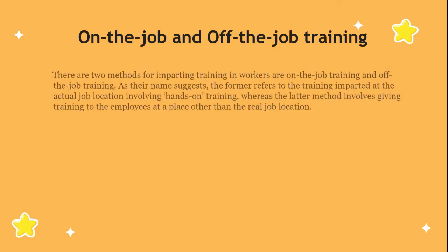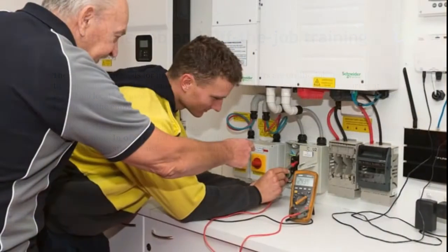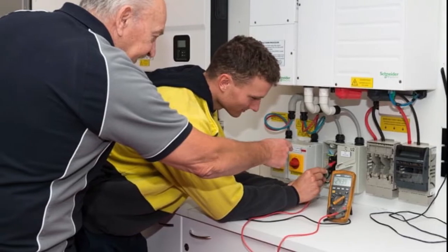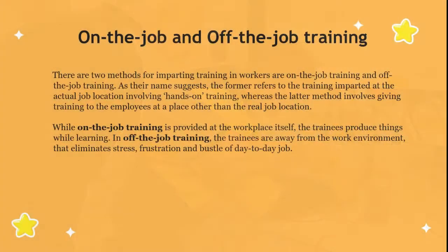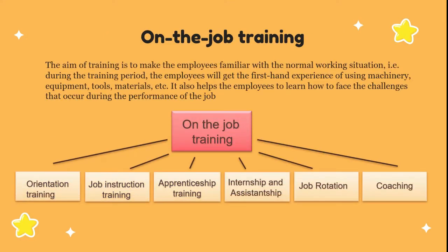Nowadays training has become the core need of any organization to develop specific skills in their existing employees. There are two methods for imparting training in workers, which are on-the-job training and off-the-job training. As the name suggests, on-the-job training is a training where employees are provided training at the workplace.